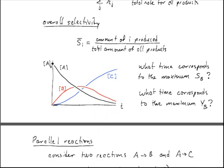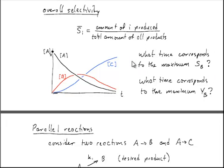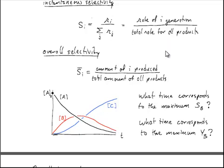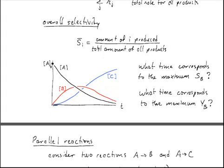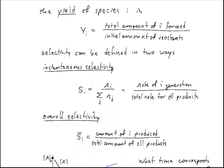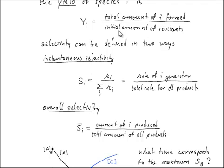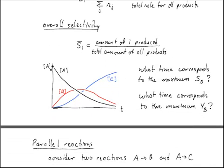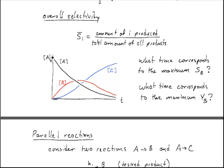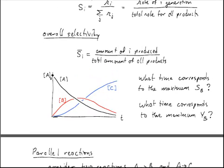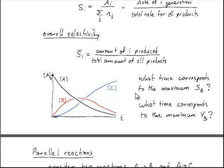Remember that what we want when we talk about selectivity is to make B and not make anything else. So there is, in fact, a very clear definition to this moment in time, and based on these definitions, which actually for this case turn out to be the same, it's straightforward to figure out what that time should be. What time corresponds to the maximum yield of B? Again, this is related to the total amount of species I formed divided by the initial amount of reactants. So here we're not directly penalizing the formation of C in any way. We just want to get the most B out of the reactants that we use. So again, this one has a very, very clear definition that we could use to go through and find this. It may be a little more difficult on this one to actually point to a specific number because of the qualitative nature of this chart.